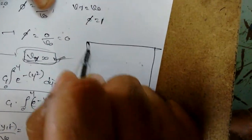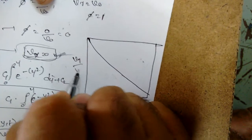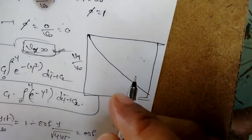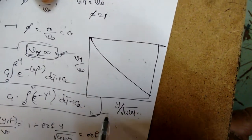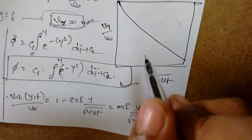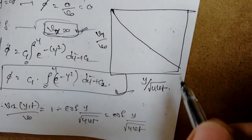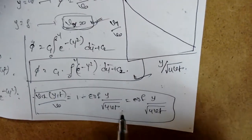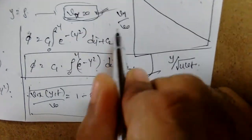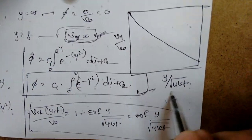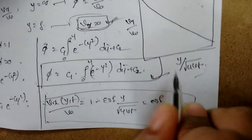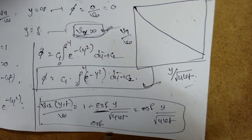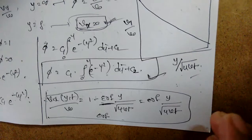The result can be plotted as vx/v₀ versus y/√(4νt), giving a curve that slopes downward. The complementary error function erfc(y/√(4νt)) = 1 − erf(y/√(4νt)) appears in the solution. So the final answer is vx(y,t) = v₀ · erfc(y/√(4νt)). Thank you for watching.